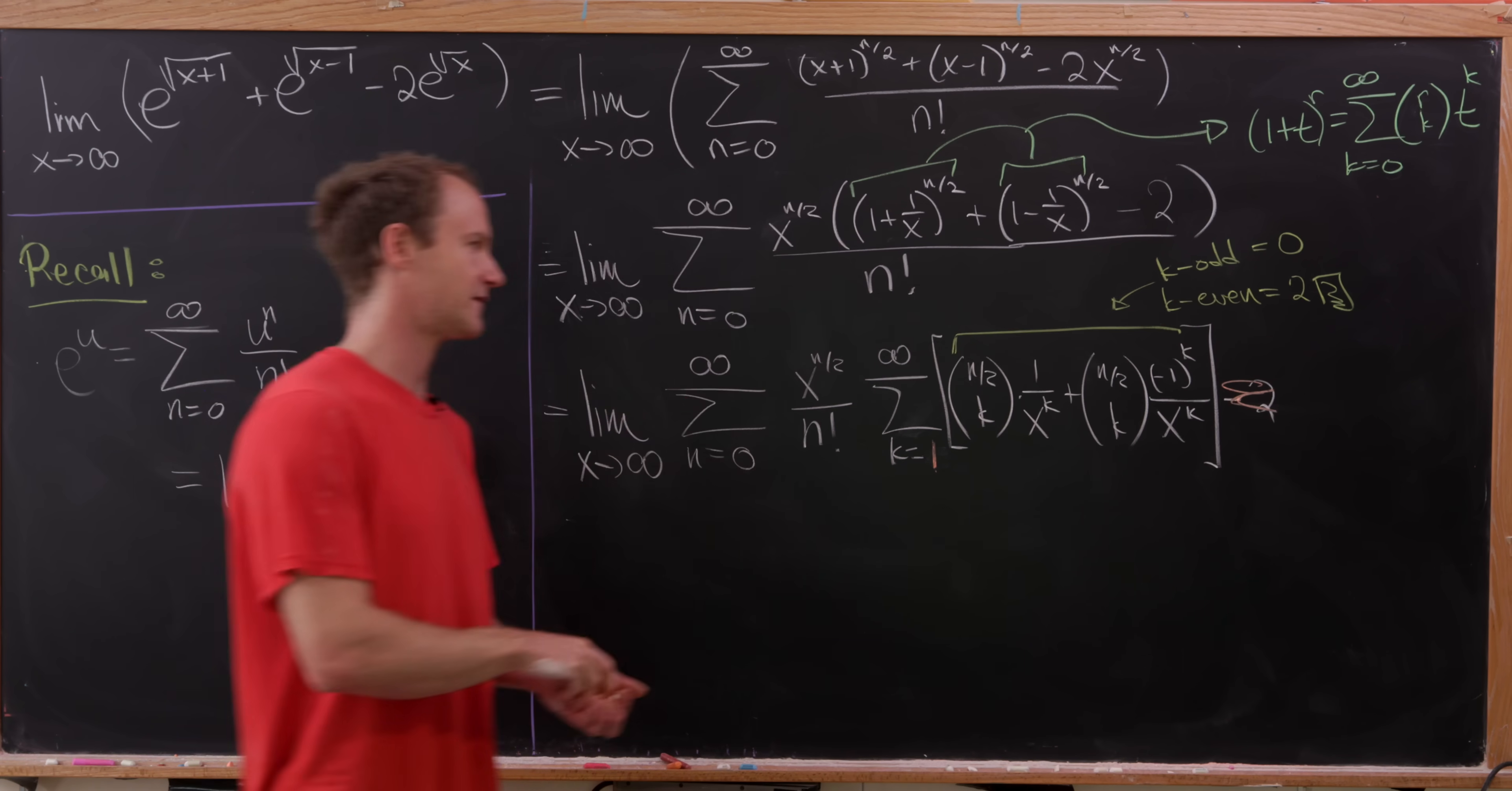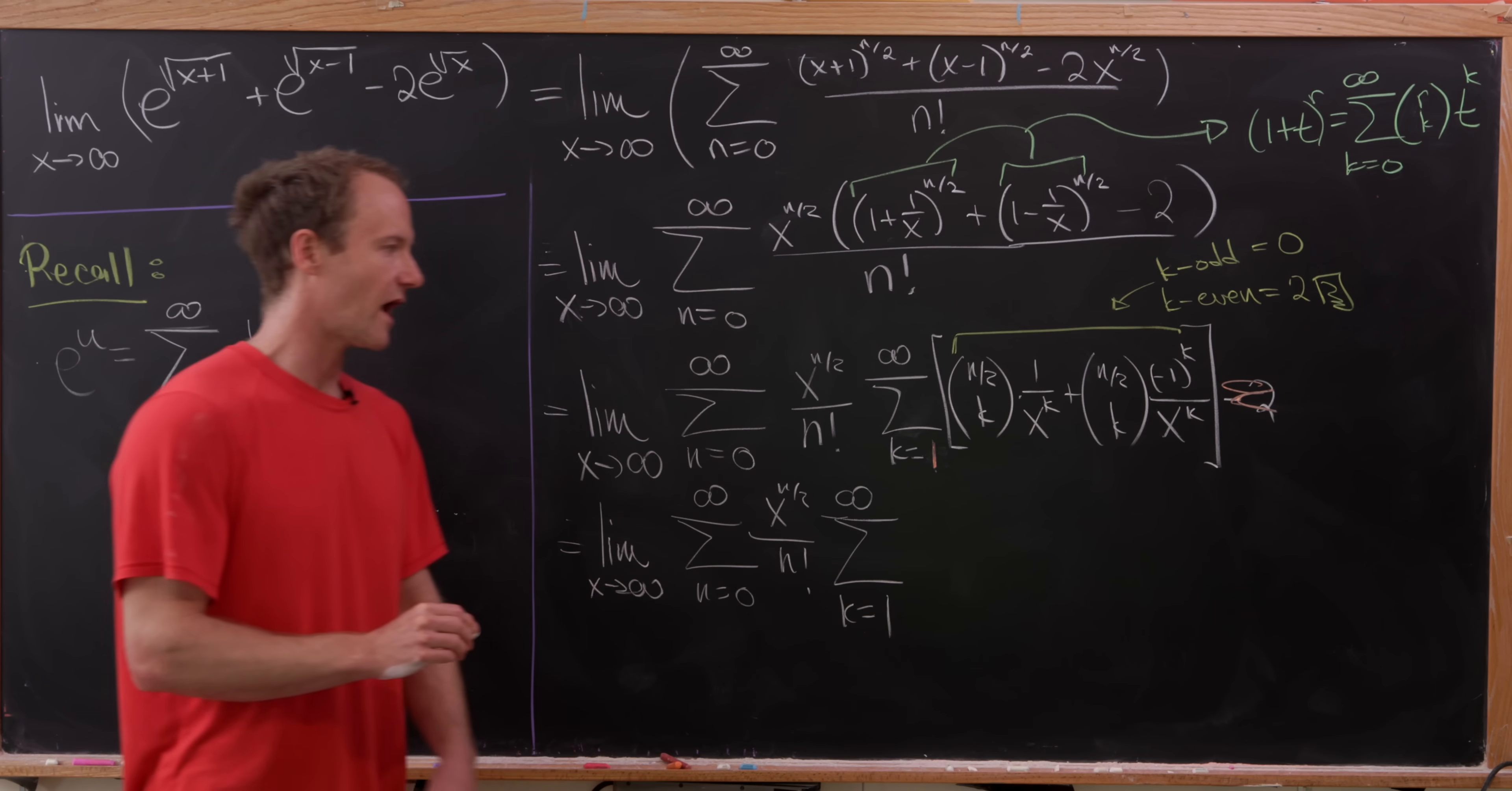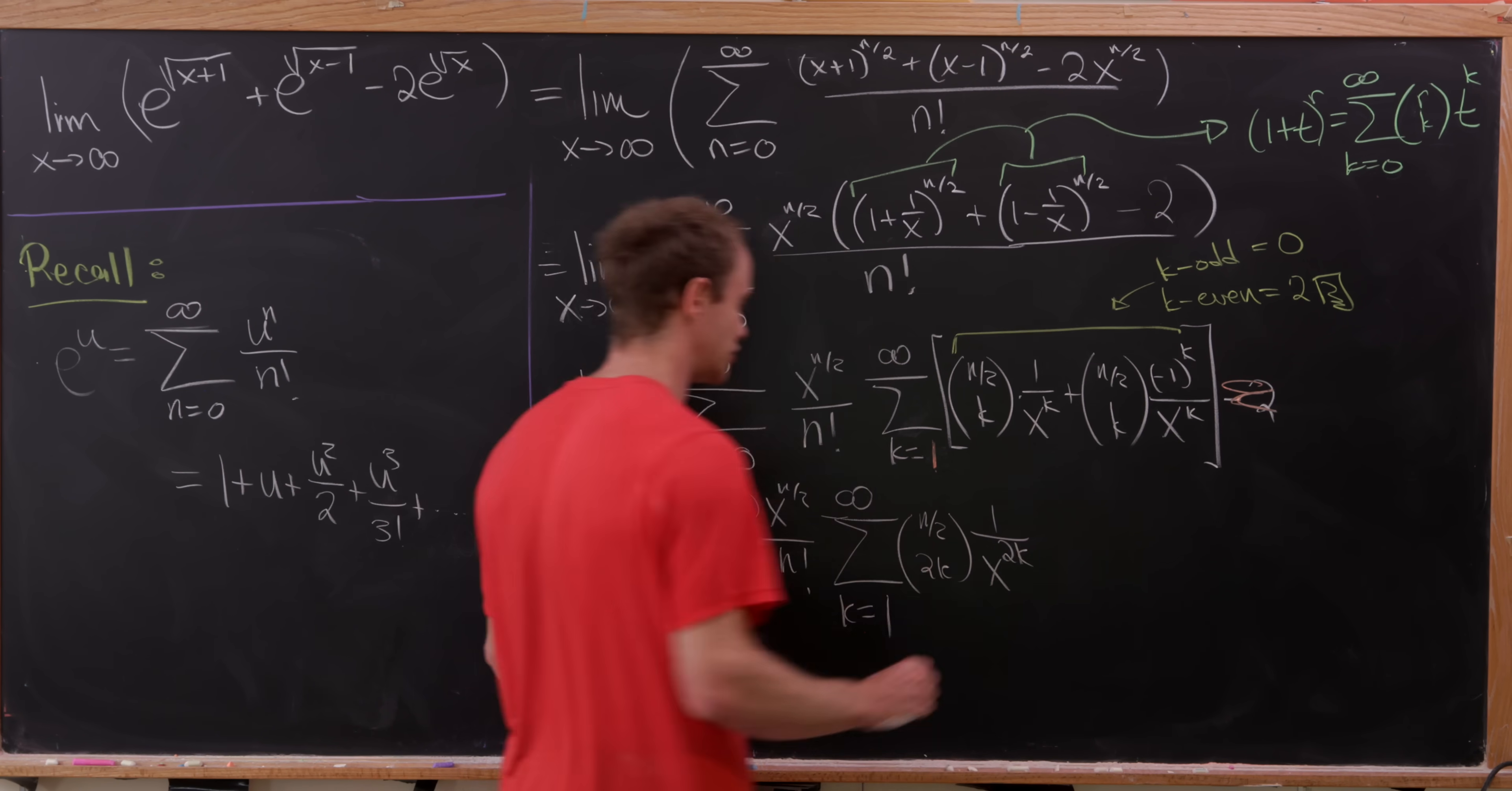Well, whatever we have. So we've got our limit as x approaches infinity, and then our sum as n is going from 0 to infinity, x to the n over 2 over n factorial. And then the sum as k goes from 1 to infinity, where to encode in there that we're only keeping the even terms, we'll just change all the k's to 2k's. I'm also going to factor this 2 out there. So that's going to give us n over 2, choose 2k, and then we'll have 1 over x to the 2k.